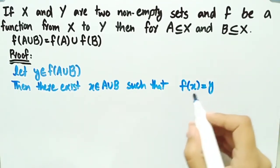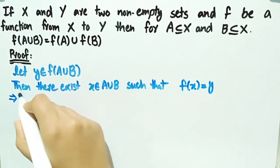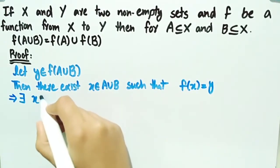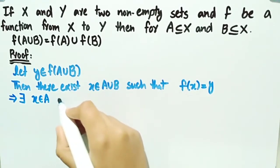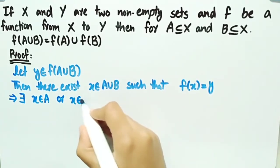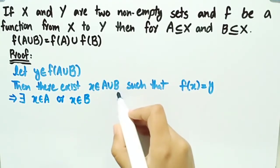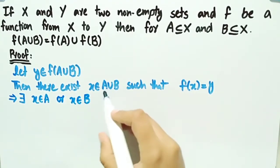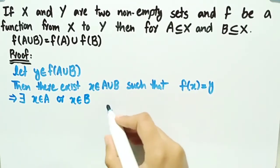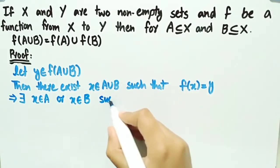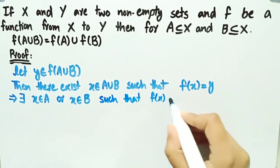That is, y is the image of x under f, which implies there exists x belonging to a, or x belongs to b, since x belongs to a union b. It is not necessary that x is in both sets — x can be in a or it can be in set b — such that f of x is equal to y.